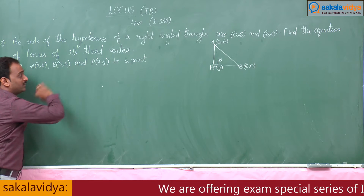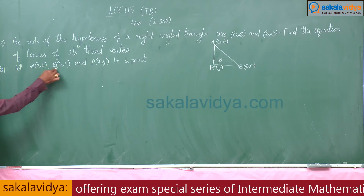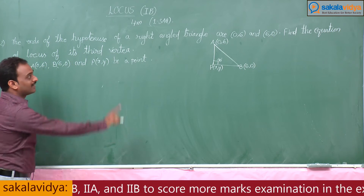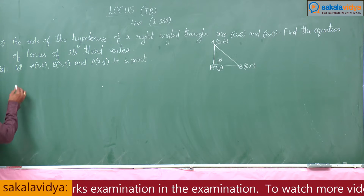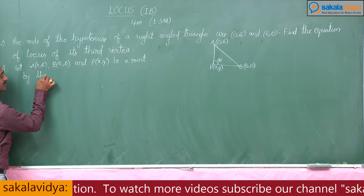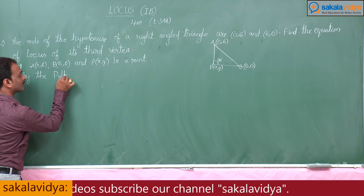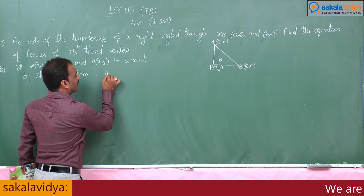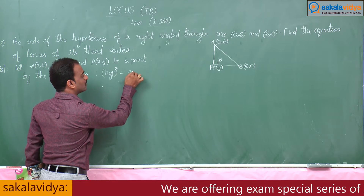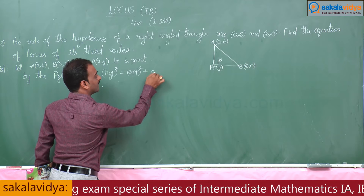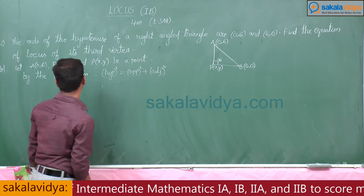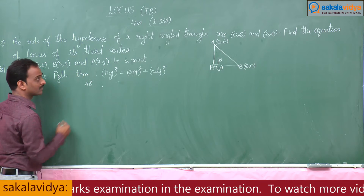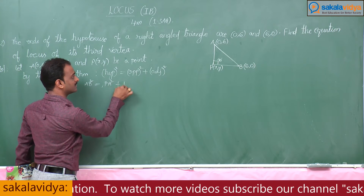Let A = (0,6), B = (6,0), and P = (x,y) be any point on the locus. By the given condition, since it is a right angle triangle, by the Pythagoras theorem, we have the identity: hypotenuse squared equals opposite squared plus adjacent squared. So AB² = PA² + PB².